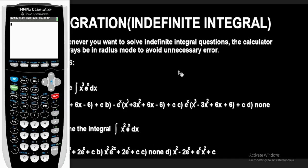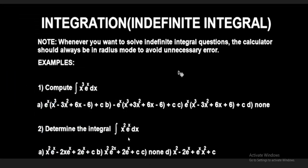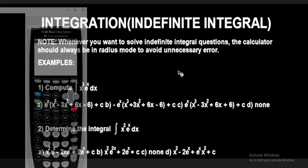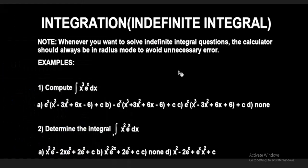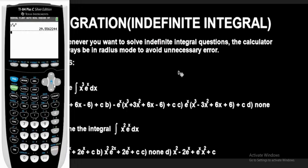Question 2 says: determine the integral of x squared times exponential to the power of x. We are still going to use the value 2 stored on this calculator — we don't need to clear anything. So let's simplify x squared times e to the power of x. Press X square, then press second and the LN button for exponential, and press X for the power. Press enter — we get 29.55.